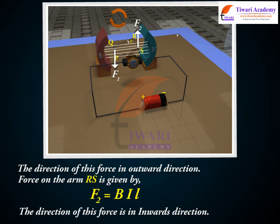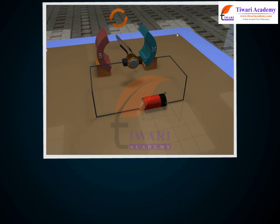The forces acting on the arms PQ and RS are equal, parallel, and acting in opposite directions along different lines of action. They form a couple which rotates the coil in the anti-clockwise direction.